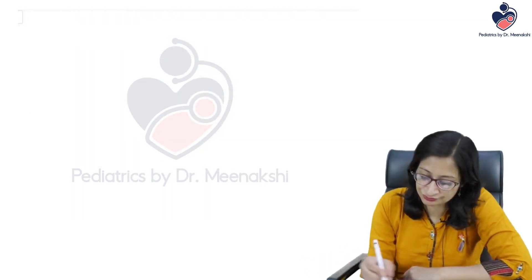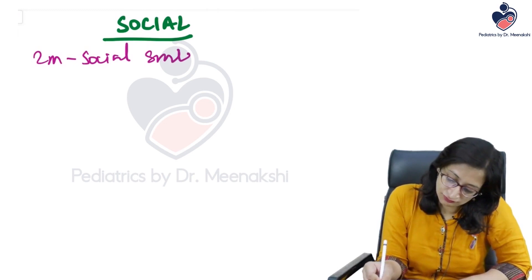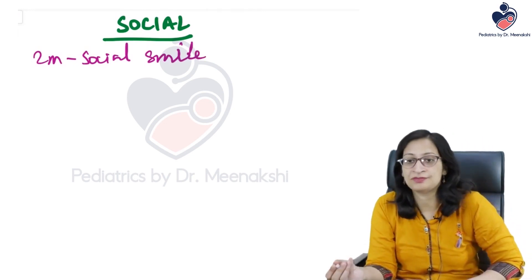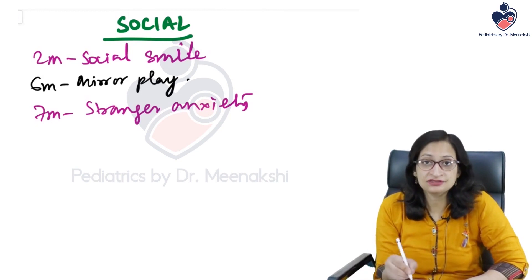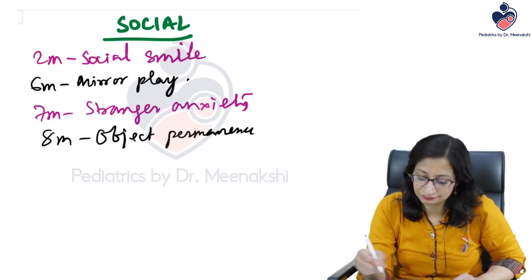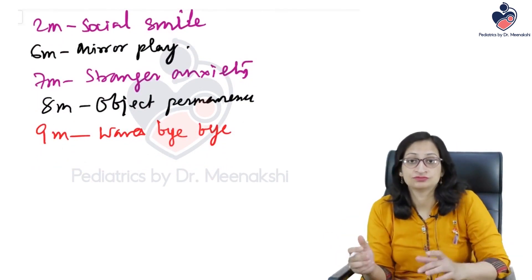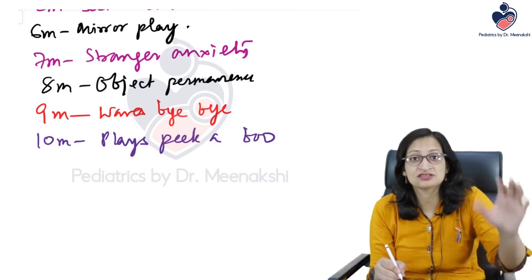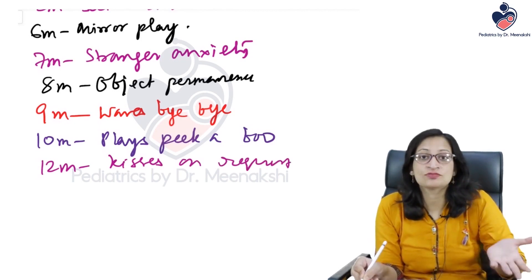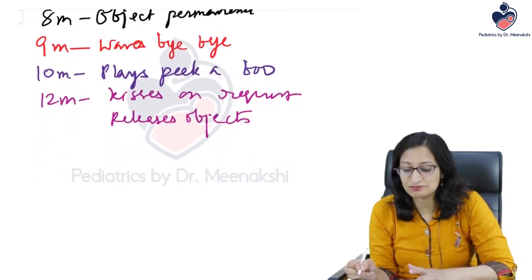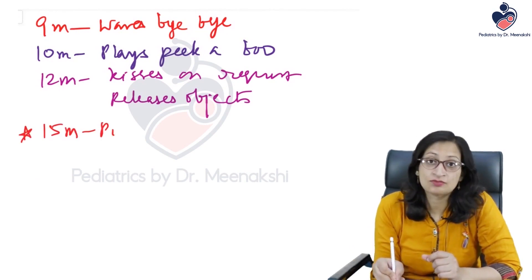Social milestones: at two months, social smile develops — very important. At six months, mirror play appears. At seven months, stranger anxiety. At eight months, object permanence. At nine months, waves bye-bye. At ten months, plays peek-a-boo. At twelve months, kisses on request, plays a simple ball game, and releases objects on request. At fifteen months, points to objects.